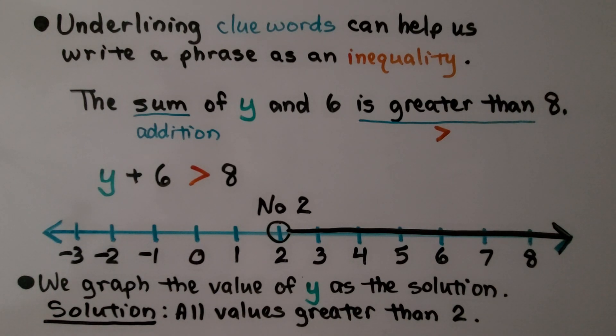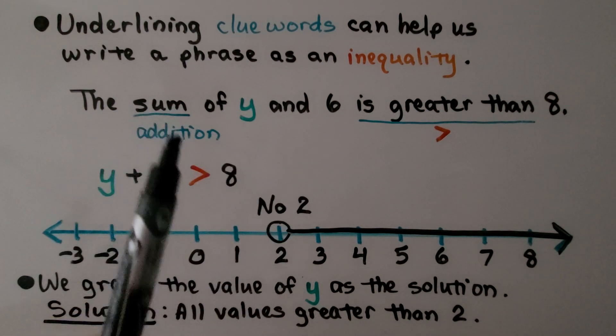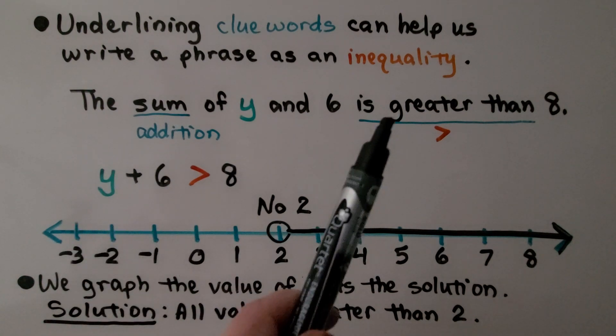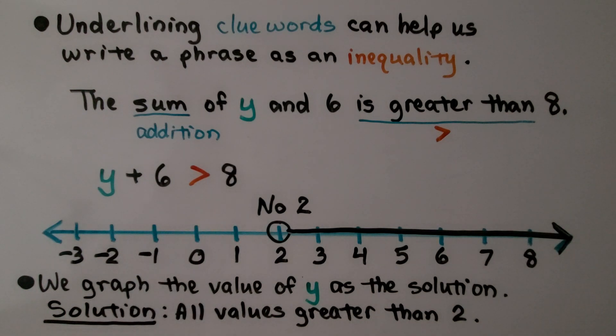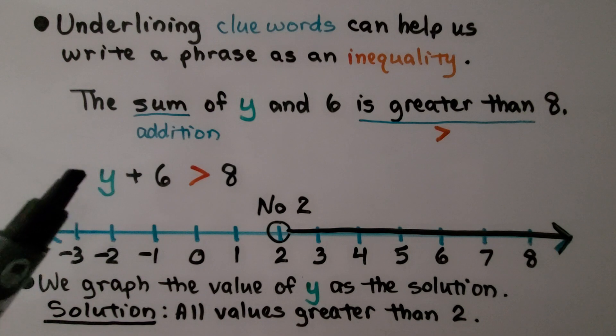Underlining clue words can help us write a phrase as an inequality. We have the sum of y and six is greater than eight. Well, the sum of y and six tells us we're adding y plus six. Is greater than, we use the is greater than symbol, and eight. We graph the value of y as the solution.